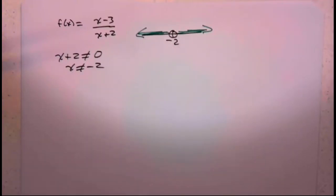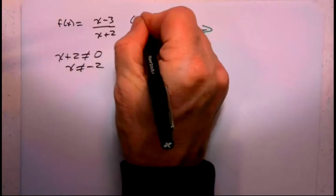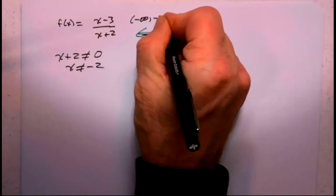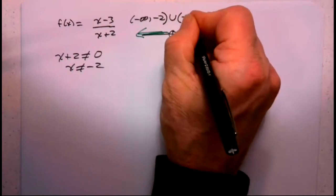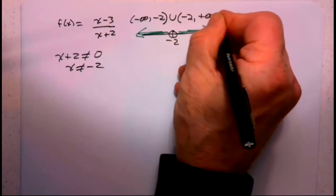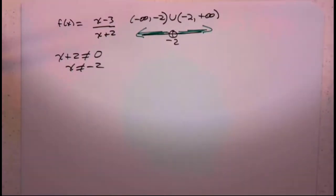So we can go from negative infinity to negative 2, round bracket, union, round bracket, negative 2 to positive infinity. Remember, always left to right for those intervals.